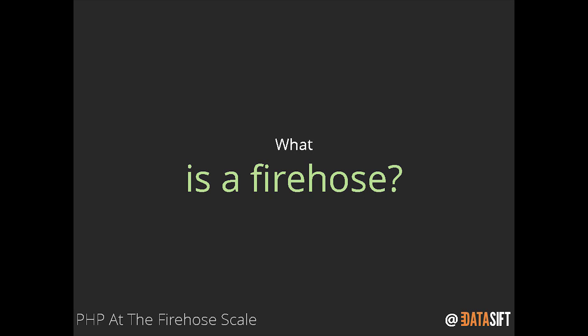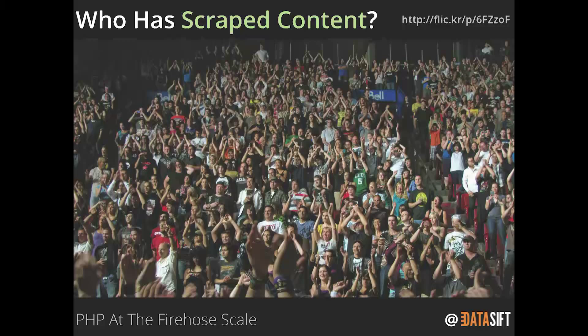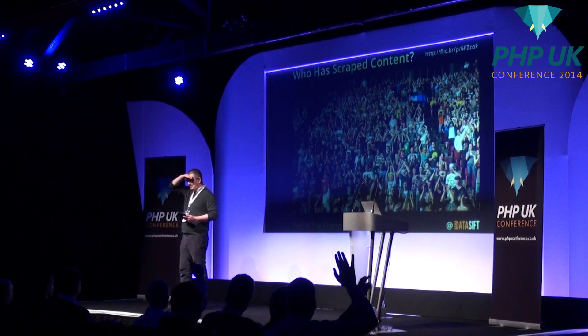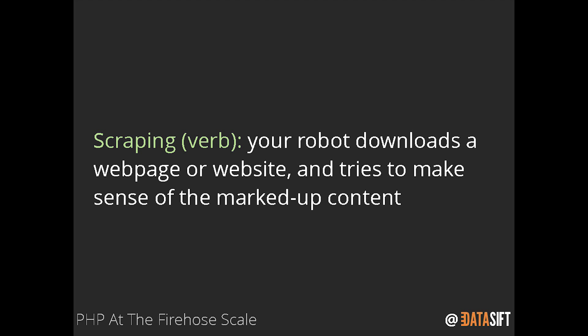Let's start off by looking at what a fire hose is. And to help explain a fire hose, let's start off with scraping. So hands up who's ever scraped a website for content - that's almost everybody. So here's my definition of scraping: you've got a robot that downloads a web page and tries to make sense of what it's downloaded. That, in a nutshell, is really what scraping is about. Let's explore that in a little bit more detail.